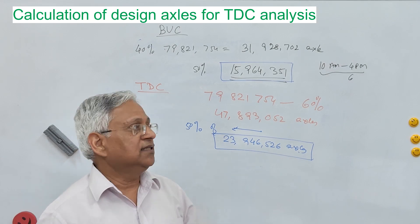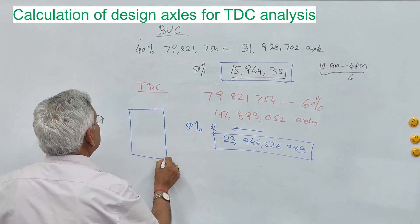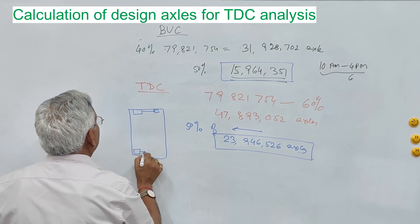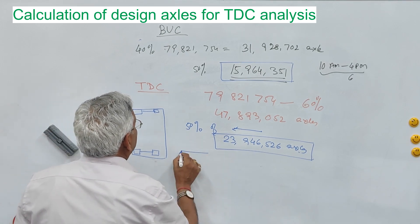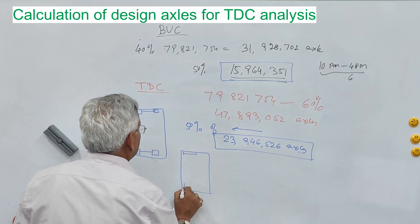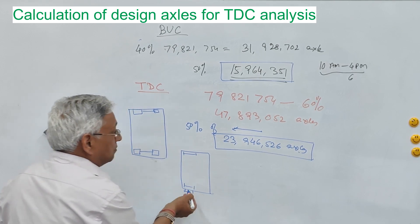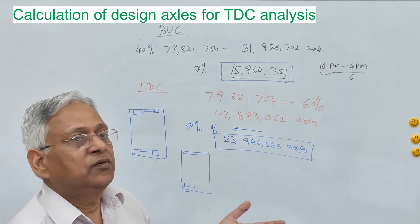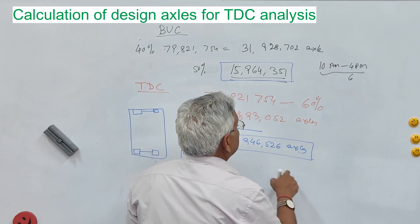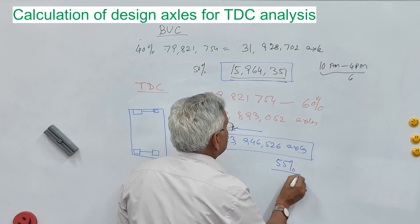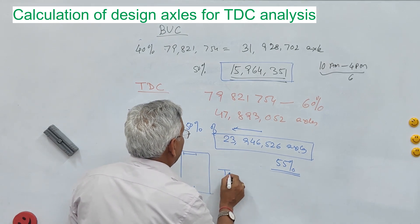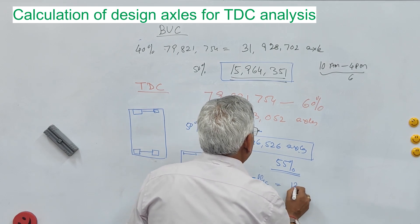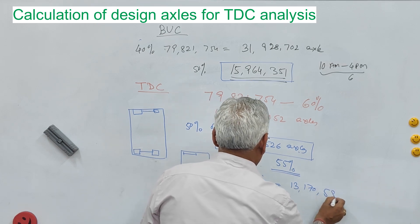For top-down cracking, only axles where the spacing between the steering axle and the first axle of the rear axle group is less than 4.5 meters are considered. If field data is available from axle load surveys, use that data; otherwise take 50%. In this example, assume 55% of axles satisfy this condition, so the final design traffic for TDC = 55% of 23,946,526 = 13,170,589 axles.